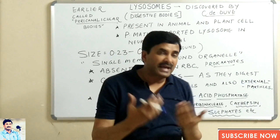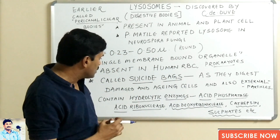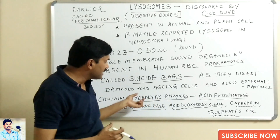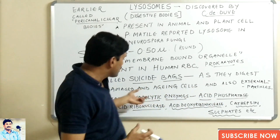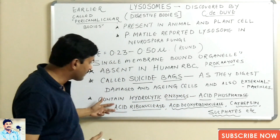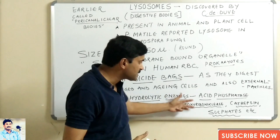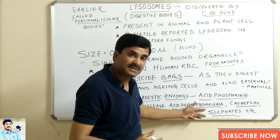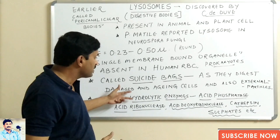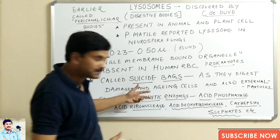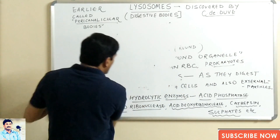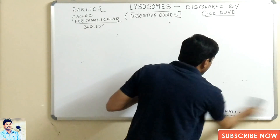Lysosomes are also called suicide bags because they digest external particles which enter the cells. The question arises: how can lysosomes perform digestion? They can do this because of the enzymes filled in them — they contain many hydrolytic enzymes, such as acid phosphatase, acid ribonuclease, acid deoxyribonuclease, cathepsin, sulfatases, etc.